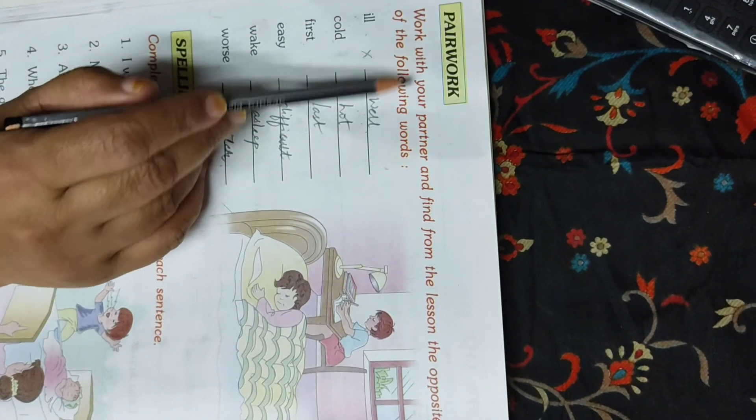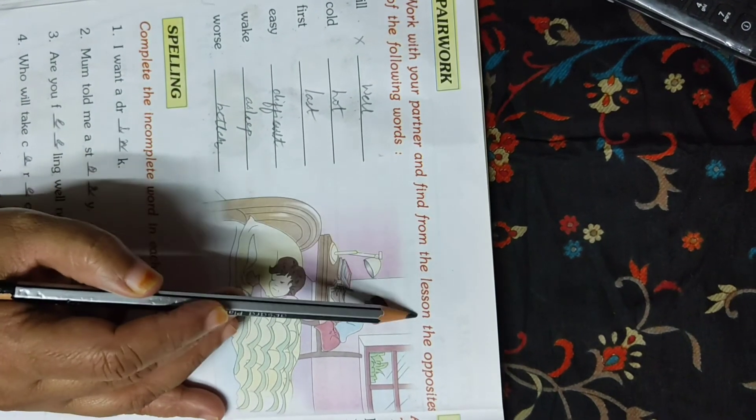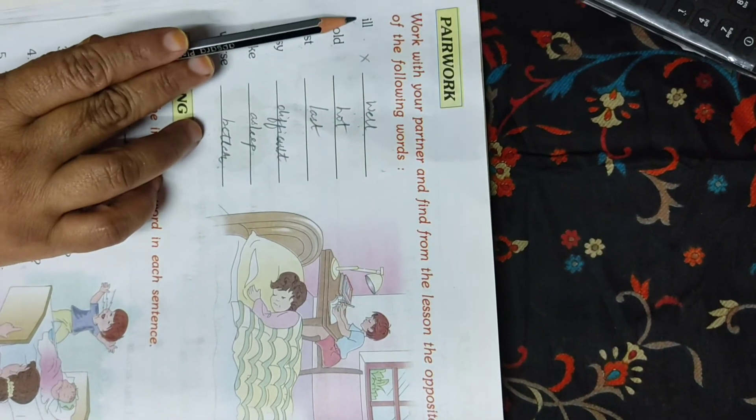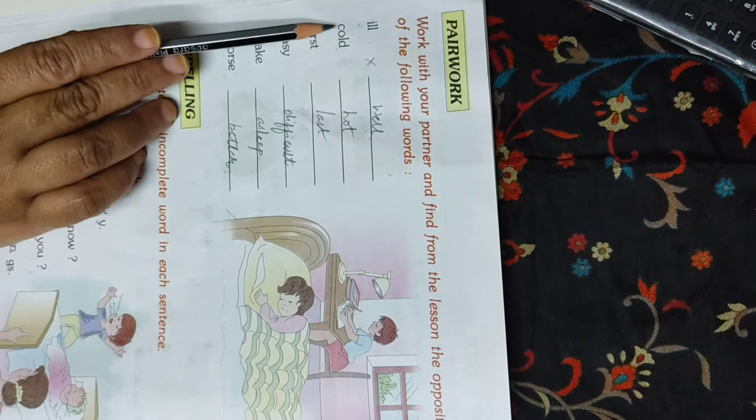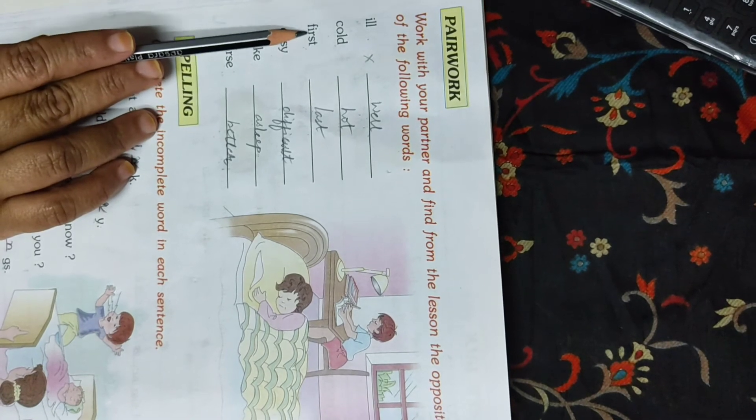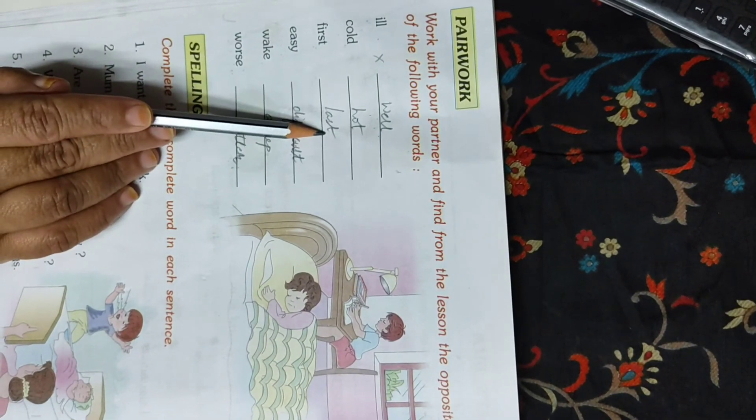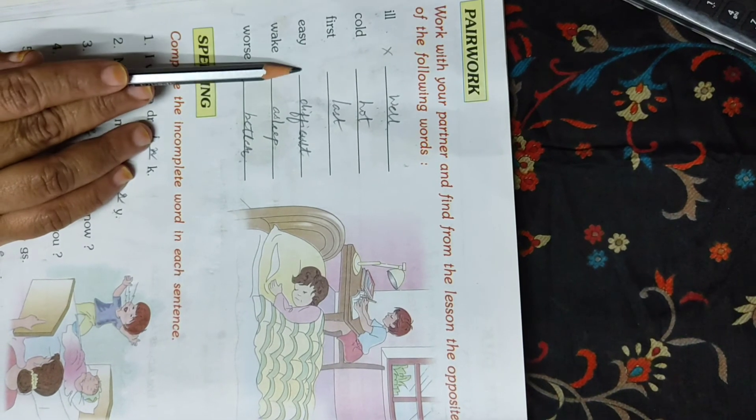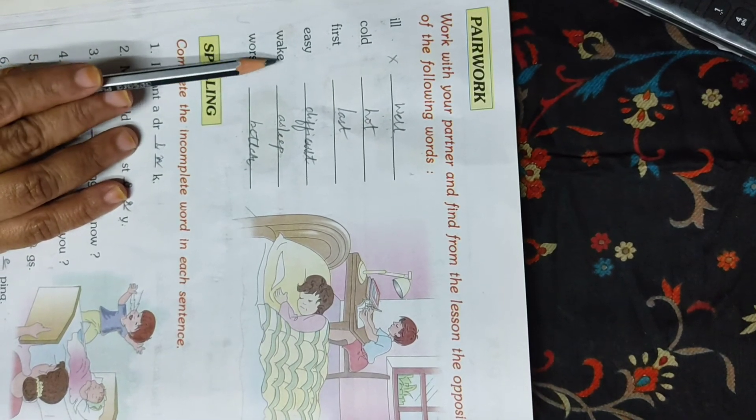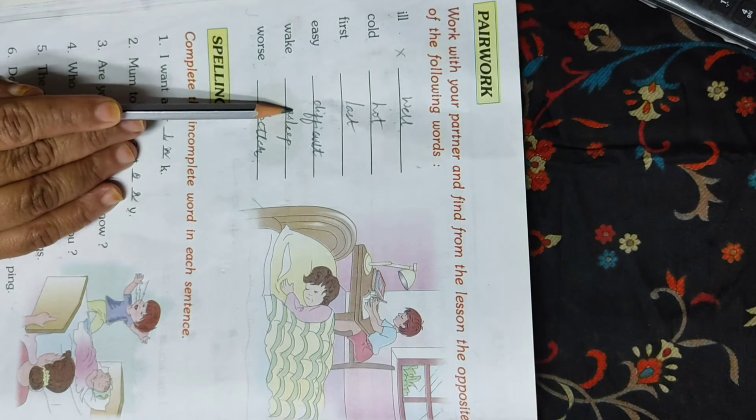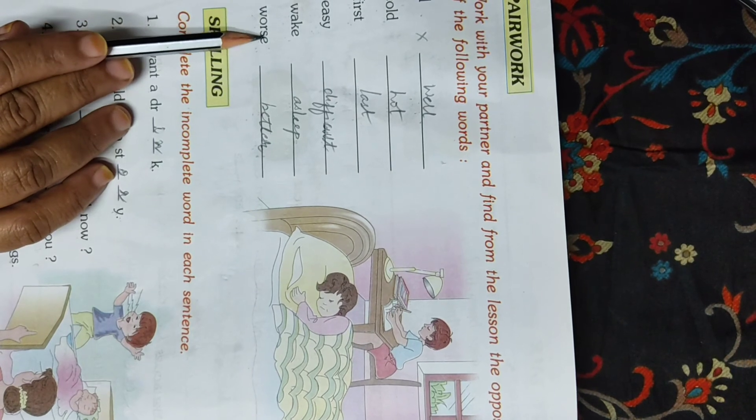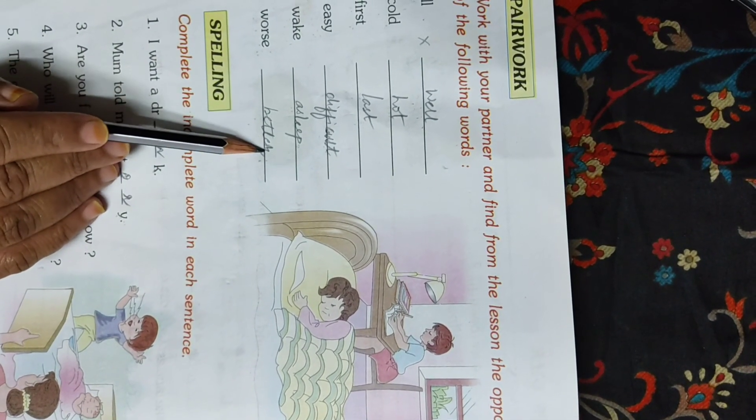Work with your partner and find from the lesson the opposite of the following words. Read after me, students. F-I-R-S-T first. L-A-S-T last. E-A-S-Y easy. Opposite is difficult. D-I-F-F-I-C-U-L-T difficult. W-A-K-E wake. A-S-L-E-E-P asleep. W-O-R-S-E worse. B-E-T-T-E-R better.